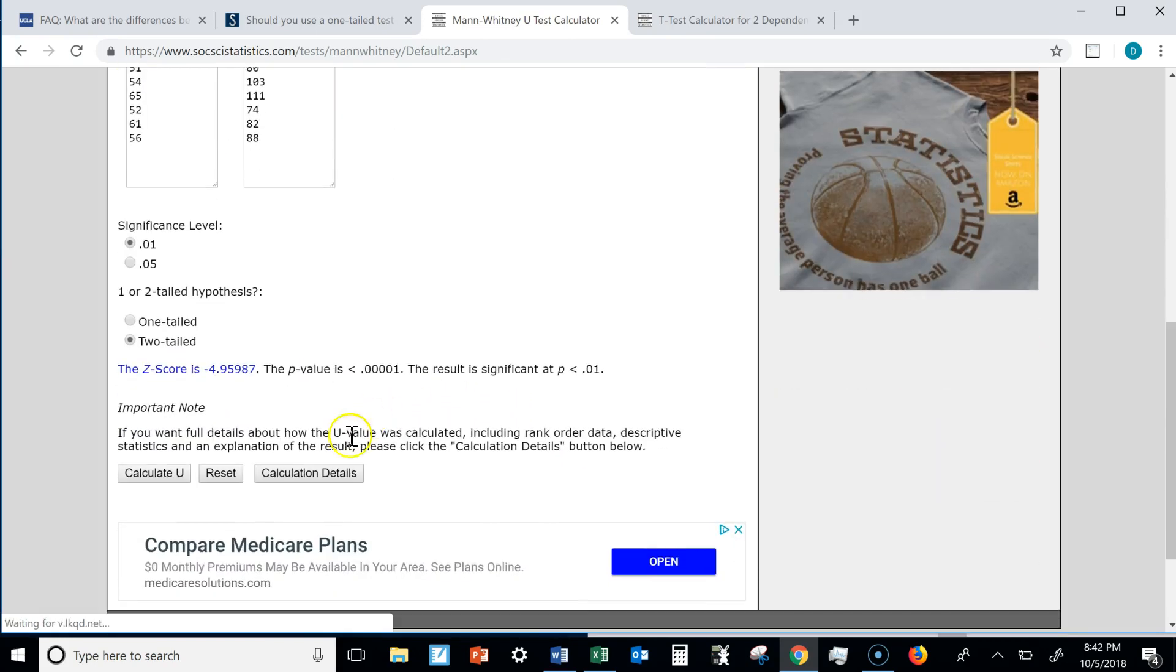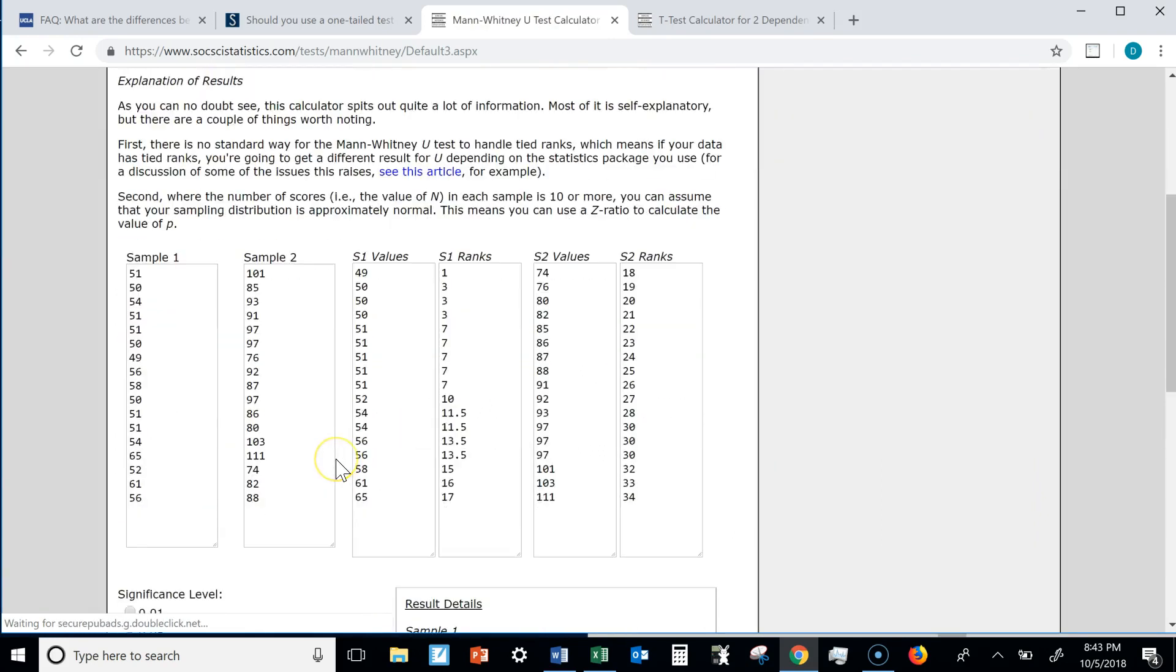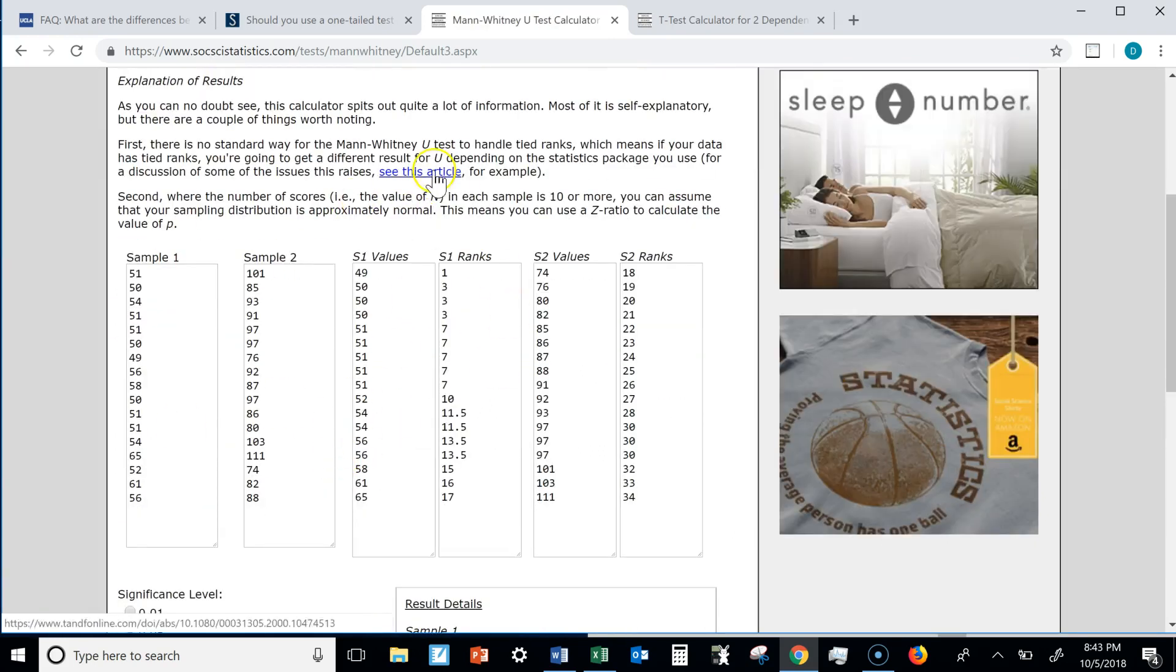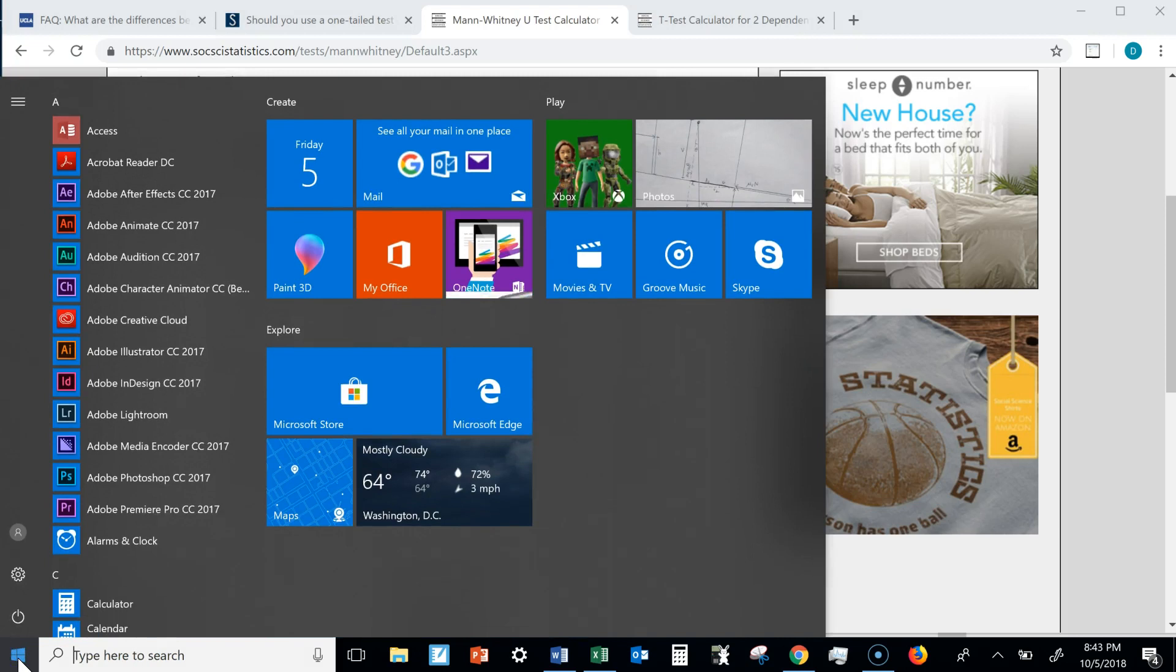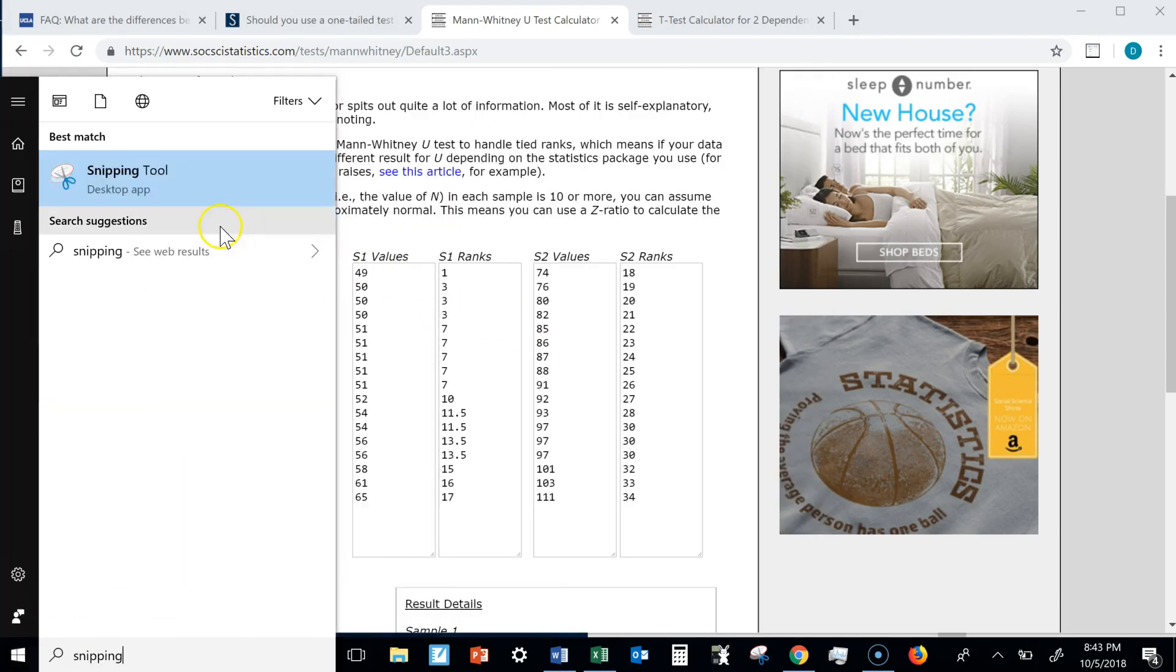So now I need to click on calculation details to pull up some more information, and I can copy and paste this into a Word file. The way we do that is by clicking on the Windows icon, and then you can type snipping to pull up the snipping tool. Click here on the snipping tool.